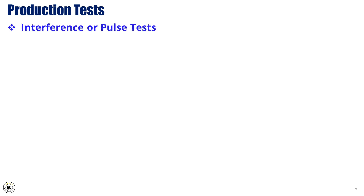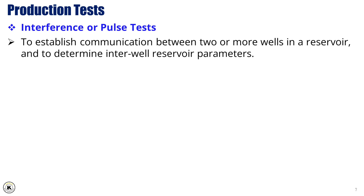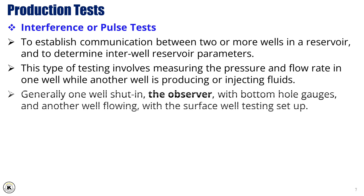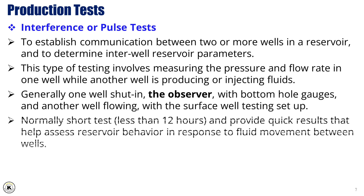Interference or Pulse Tests are used to establish communication between two or more wells in a reservoir and to determine inter-well reservoir parameters. This type of testing involves measuring the pressure and flow rate in one well while another well is producing or injecting fluids. Generally, one well is shut in — the observer — with bottom hole gauges, and another well is flowing with the surface well testing set up. Interference tests are typically short-term, usually lasting less than 12 hours, and provide quick results that help assess reservoir behavior in response to fluid movement between wells.